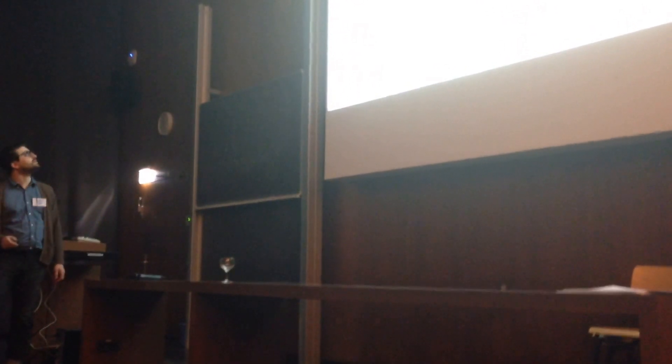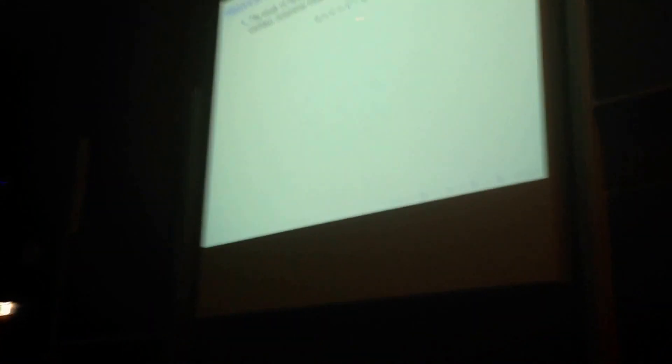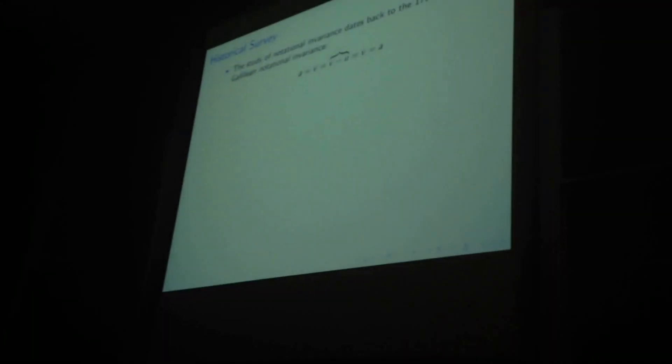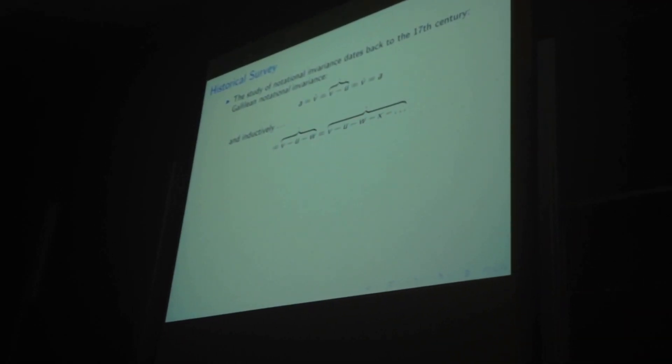So, notational invariance is actually quite old, based back to the 17th century, with the work of Galileo, who discovered that actually you can replace a velocity by a velocity minus an arbitrary velocity that doesn't change, and inductively you can then add more and more letters to it, and your equations don't change.